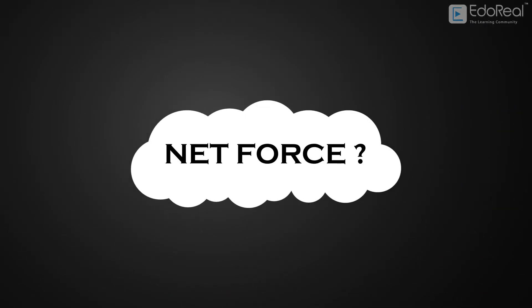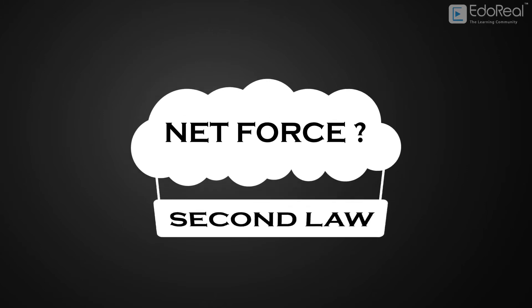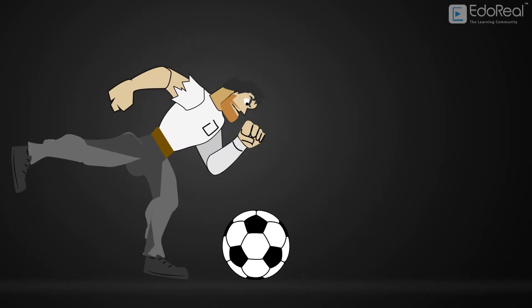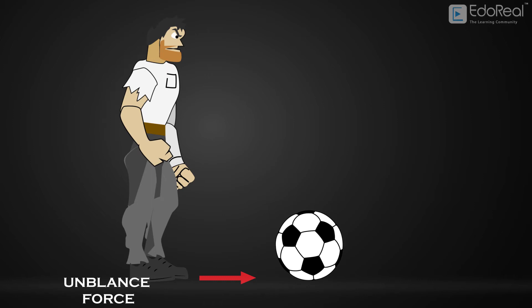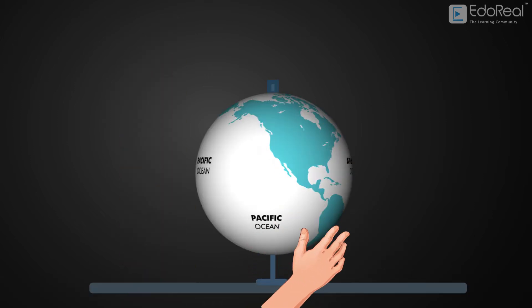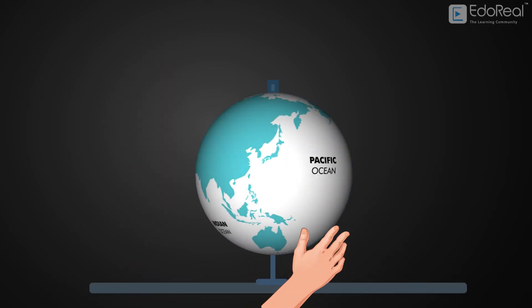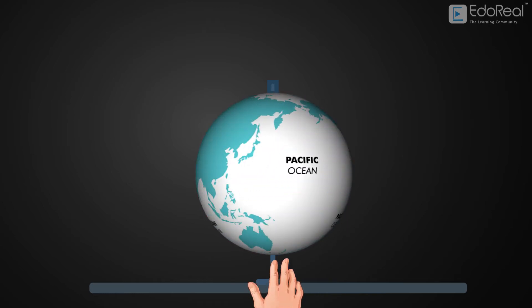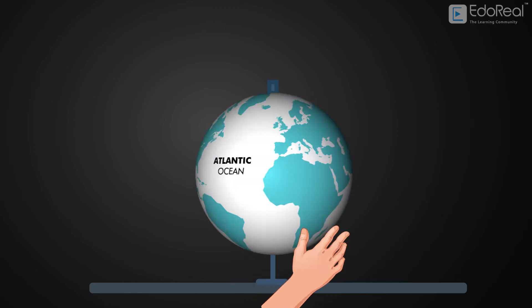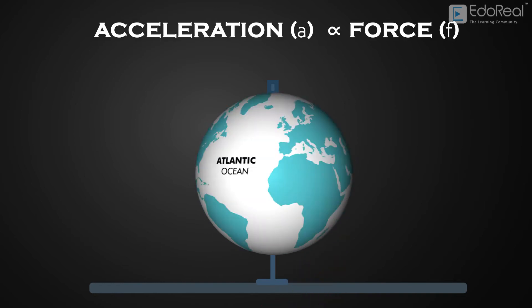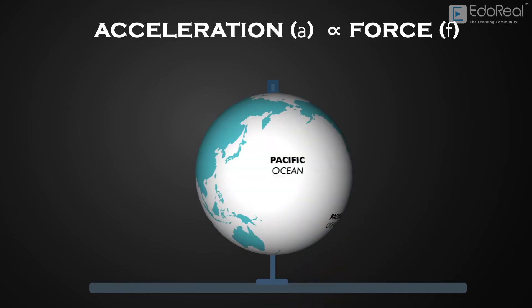What happens when there is some net force acting on an object? That is what the Second Law discusses. When acted upon by an unbalanced force, there will be acceleration. Let's take an object — if you apply a small amount of force, it will rotate slightly, and if you apply a large amount of force, it will rotate fast. Hence, acceleration is proportional to the force applied.